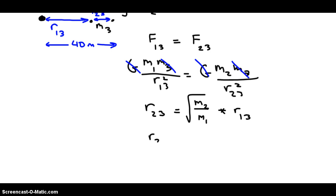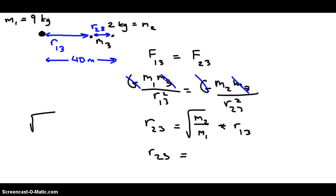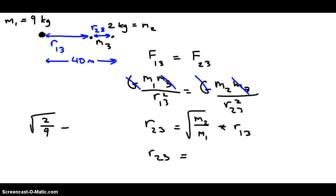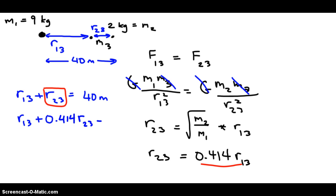So r23, if I plug into my calculator this right here, what do I want? I want to plug in radical. What's m2? m2 is 2 over m1 which is 9. Radical 2 over 9 is 0.414. Like that, and I can take this away. So what do we have here? We have r13 plus r23 is the full 40. But r23 can be replaced with that. So I'm going to write this line once more.